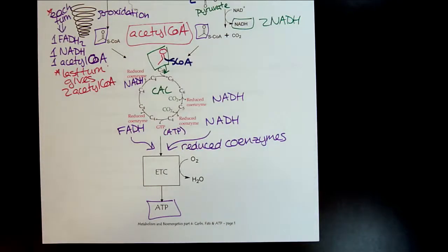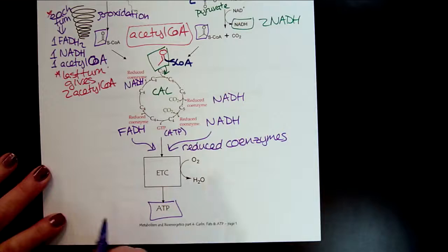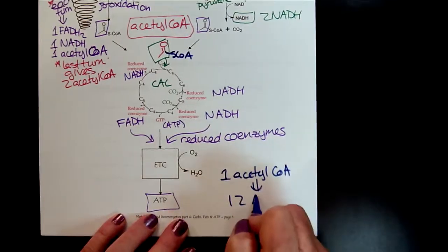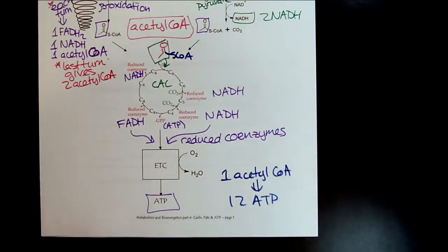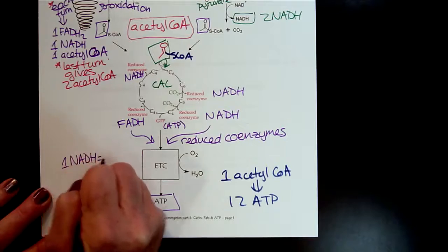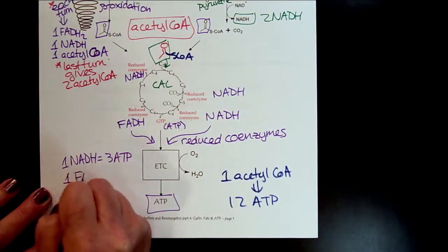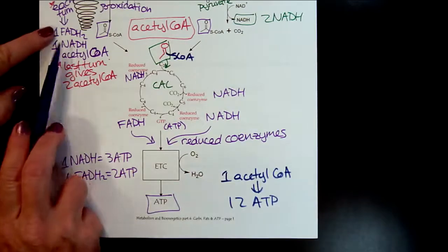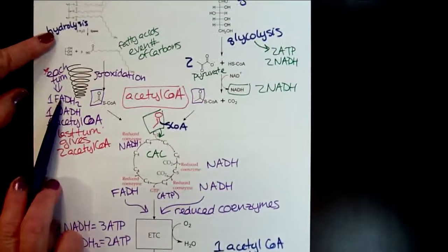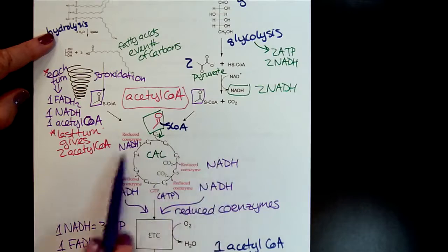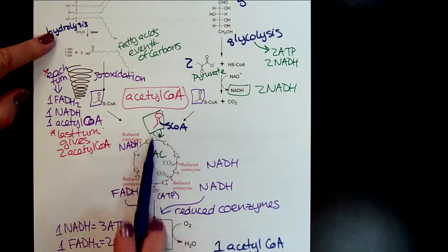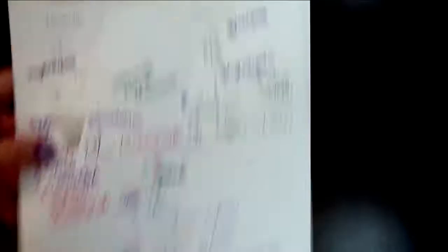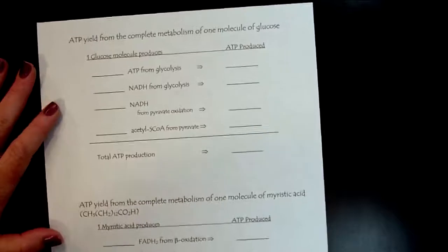And so from our previous video, we learned that for one acetyl-CoA, we can generate 12 ATP. And one NADH can give us three ATP, and one FADH2 can give us two ATP. So we have reduced coenzymes being produced directly from beta-oxidation and glycolysis. And then we have additional reduced coenzymes formed when this acetyl-CoA enters the citric acid cycle. So now, on the last page of our notes, we're going to put this all together and do a calculation of our ATP yields.